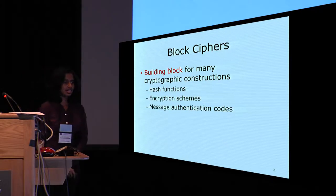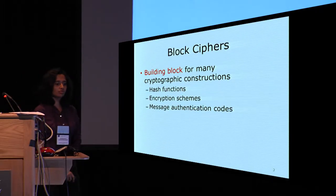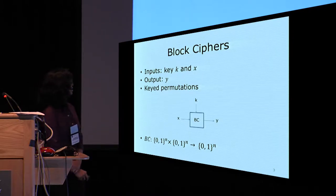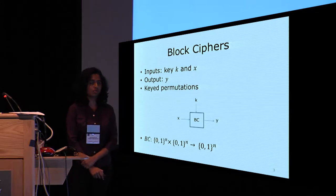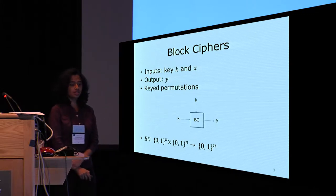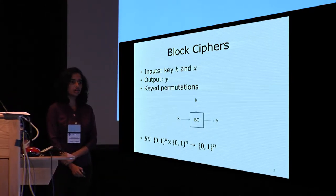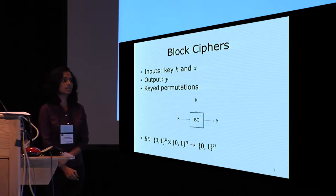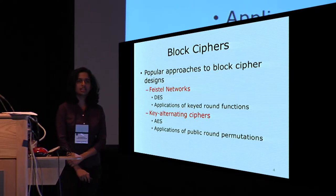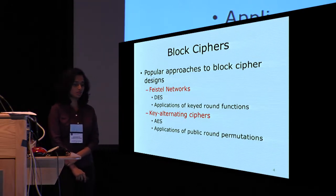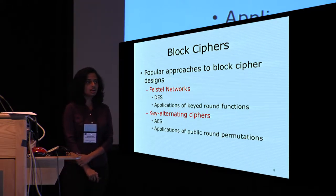Block ciphers are building blocks for many cryptographic constructions such as hash functions, encryption schemes, MACs, etc. Block ciphers take a key k and an input x and output an n-bit output y. Block ciphers are keyed permutations, so on a key k a block cipher induces a permutation. There are two popular approaches to designing block ciphers: the Feistel network, and key alternating ciphers — the focus of this talk. AES, the current block cipher standard, is a key alternating cipher.